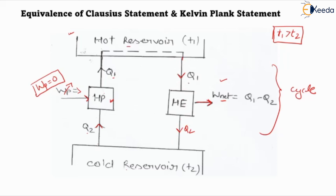The amount of heat drawn from the hot reservoir Q1 is equal to the heat discharged by the heat pump to the hot reservoir. Since the same Q1 is being transferred from the heat pump to the hot reservoir and from the hot reservoir to the heat engine, these two Q1 values are equivalent. Therefore, we can eliminate the hot reservoir — the heat is extracted directly from the heat pump and transferred directly to the heat engine, making the hot reservoir unnecessary.